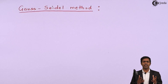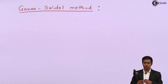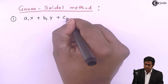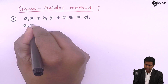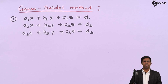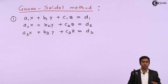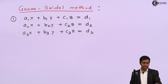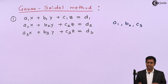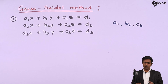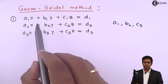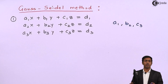To understand the modifications, we will consider some simultaneous equations. Let's say we have three simultaneous equations with three unknowns. To get the roots of these three equations, you will observe that coefficients a1, b2, and c3 will be large compared to the other coefficients of x, y, and z. To solve by Gauss-Seidel, we first represent these three equations so that these large coefficients go into the denominator.